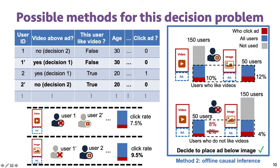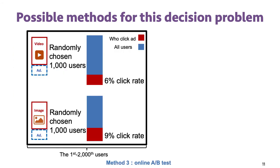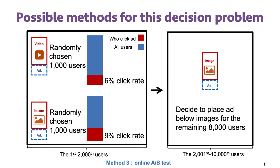The wrong decision will apply to all 10,000 users. All offline causal inference algorithms only use the log data. Companies nowadays usually conduct A/B tests on a small portion of users before applying the decision to all users. After conducting the experiment on 2,000 users, we apply the winning decision — that is, to place the ads below images — to the remaining users. In the A/B test, we use at least 1,000 users to test the worst decision of placing ads below videos. This is the possible drawback of online A/B tests, which do not use log data.